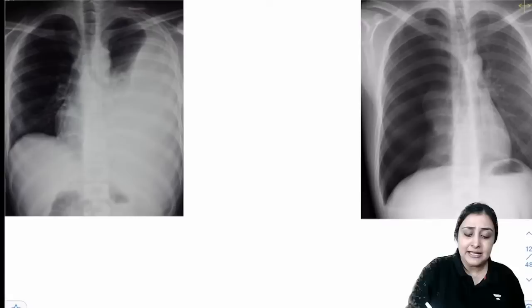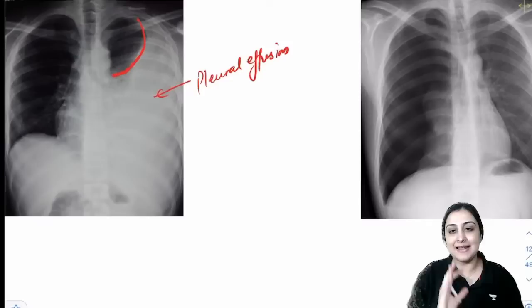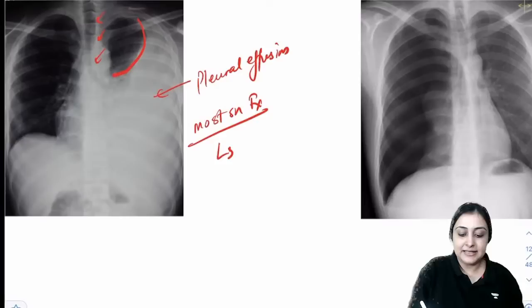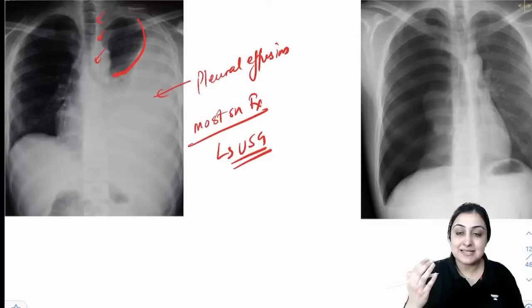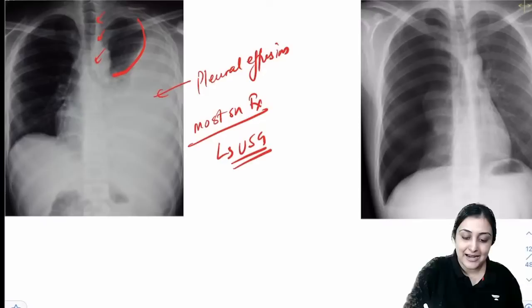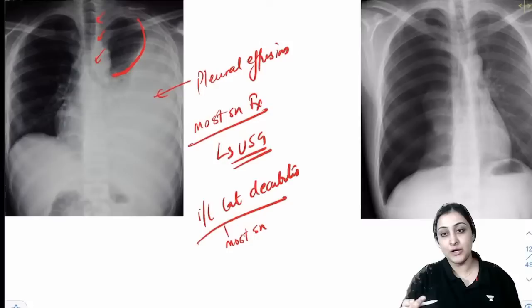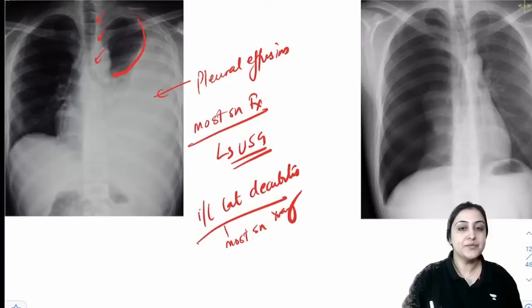Two most important chest images: pleural effusion shows opacity with a meniscus curving laterally, with contralateral mediastinal shift. Hemothorax, hydrothorax, chylothorax — same appearance on X-ray. Most sensitive investigation for effusion: ultrasound. Most sensitive X-ray: ipsilateral lateral decubitus. Next step in medicine cases: tap the fluid and apply Light's criteria to differentiate transudative from exudative.